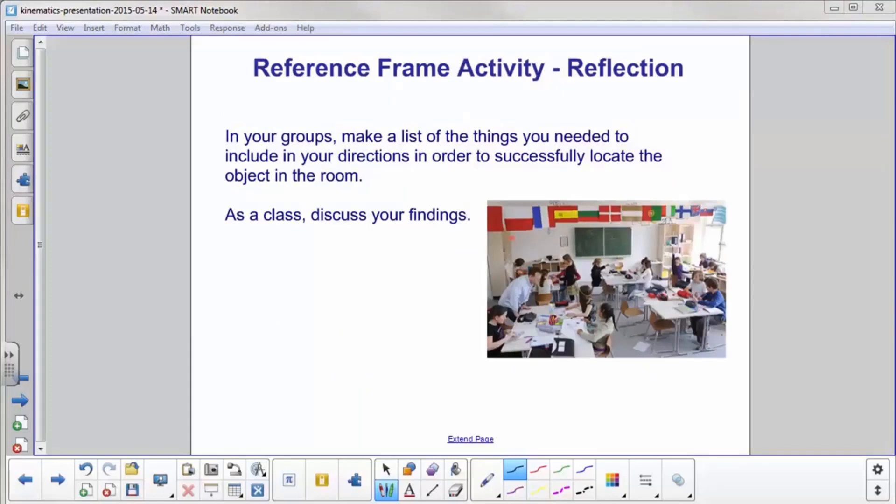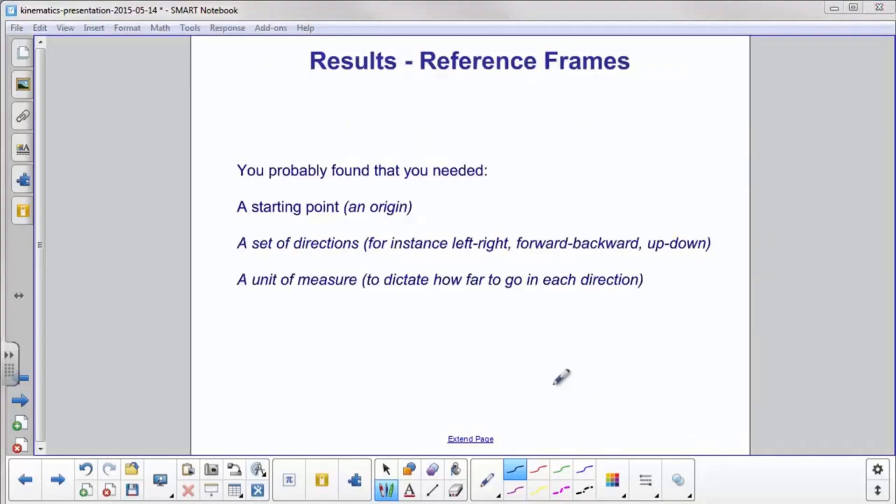After your classmate came back in, we're now going to reflect on what occurred. So go back into your groups, and make a list of the things you needed that worked, that were good with the directions that helped your classmate locate where the object was. Be sure to include that person in your discussion. Then, as a class, discuss your findings. As part of your discussion, hopefully you found out that you needed the following things.